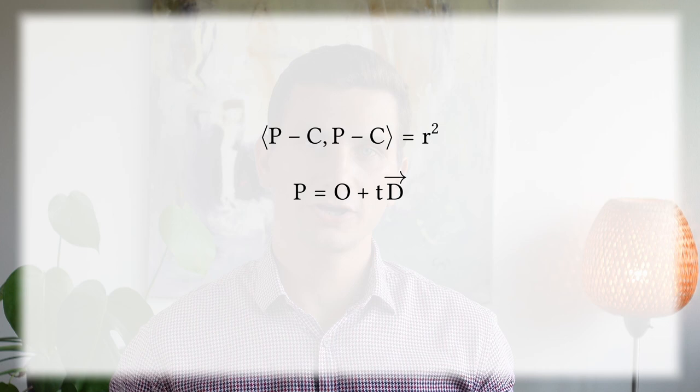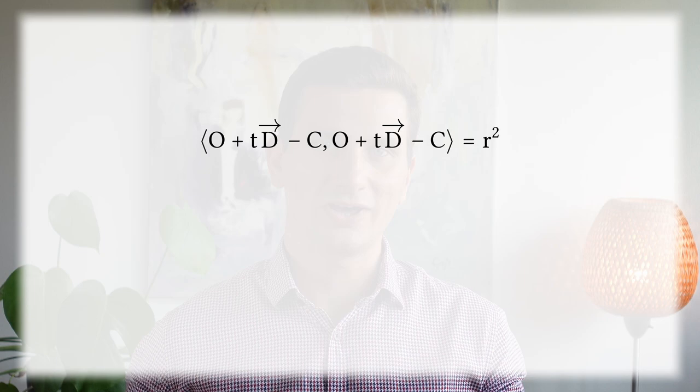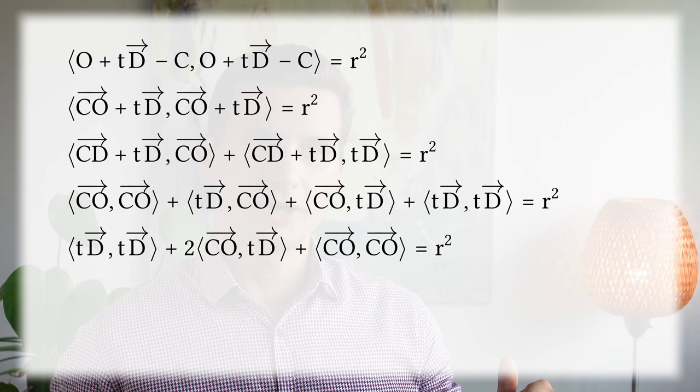A sphere is defined by its center and radius. All points that have distance r from the center belong to the sphere — like the surface of a ping pong ball. With a little linear algebra we can reformulate this into a more convenient form. Now we want to check if the ray hits the sphere. We insert the ray equation into the sphere equation and check for different values of t if the equation becomes true. A better solution is to solve this equation, which yields a quadratic equation in t.